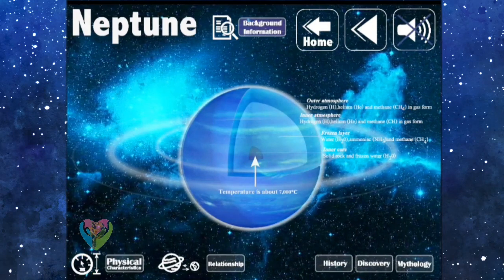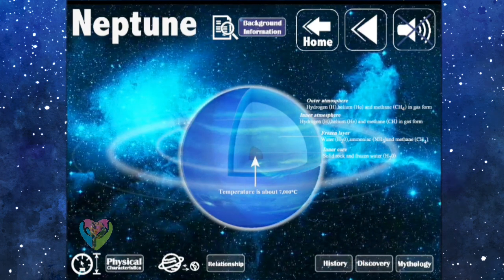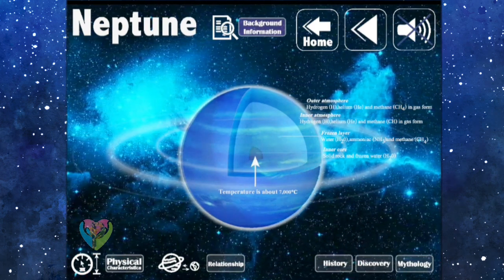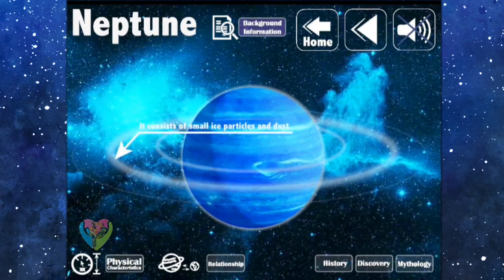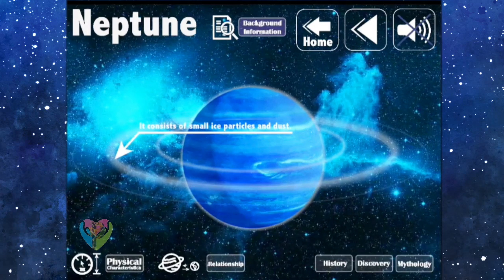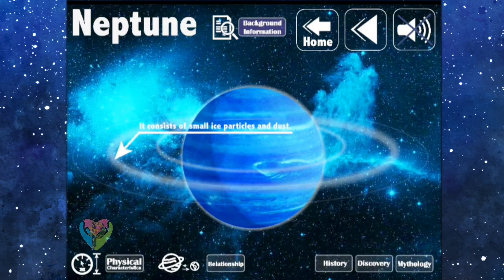The inner core of Neptune consists of hot rock and gas, with temperatures about 7,000 degrees Celsius or 12,622 degrees Fahrenheit. Neptune has six rings, but they're not really bright because they may consist of icy particles.